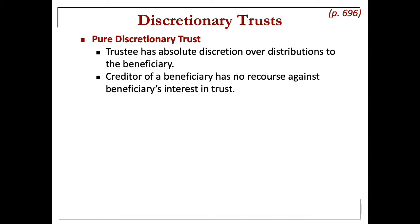A creditor can't reach the property in the trust if it is a pure discretionary trust. Once it's distributed, it's no longer trust property — the legal title passes to the beneficiary. The trustee has legal title to the trust property, and the beneficiary just has the right at some point in the future to have ownership of the property, but not the right to require the trustee to distribute it.